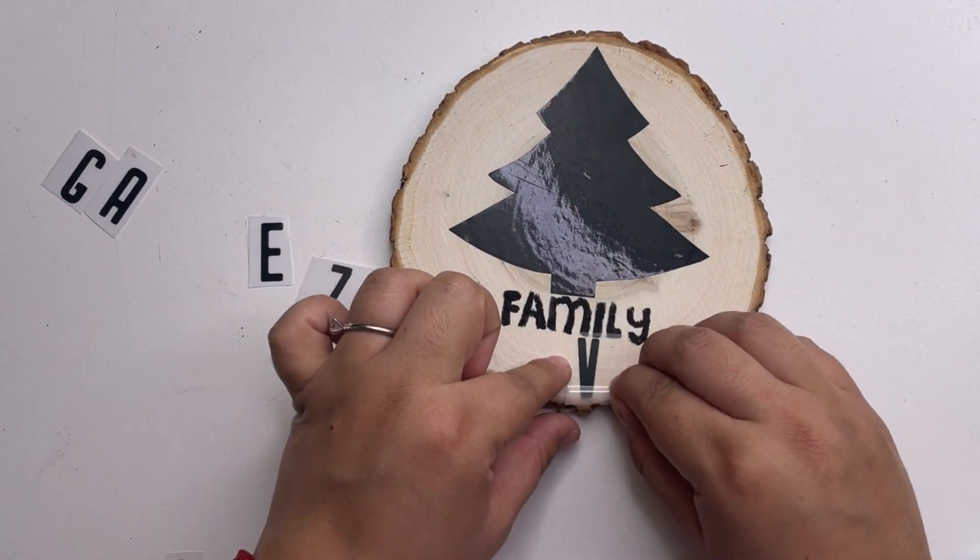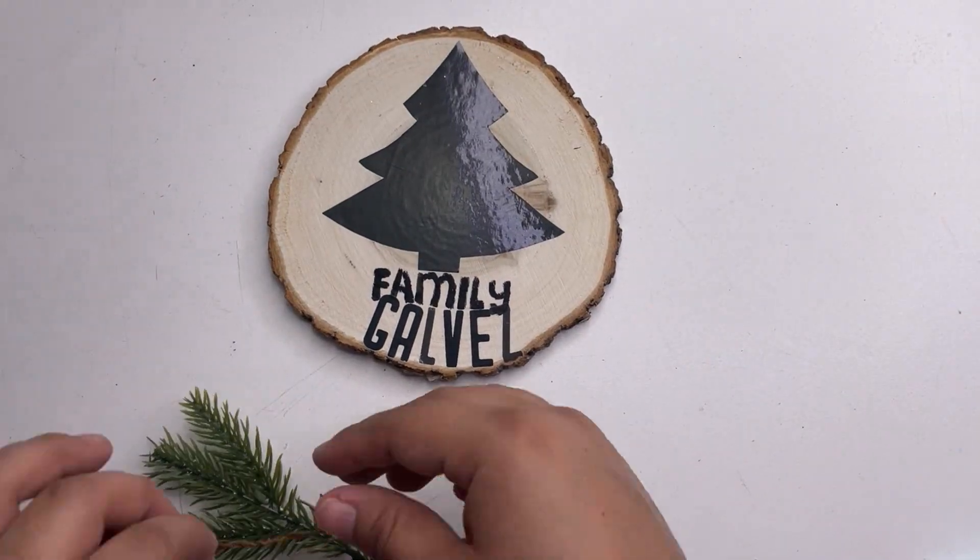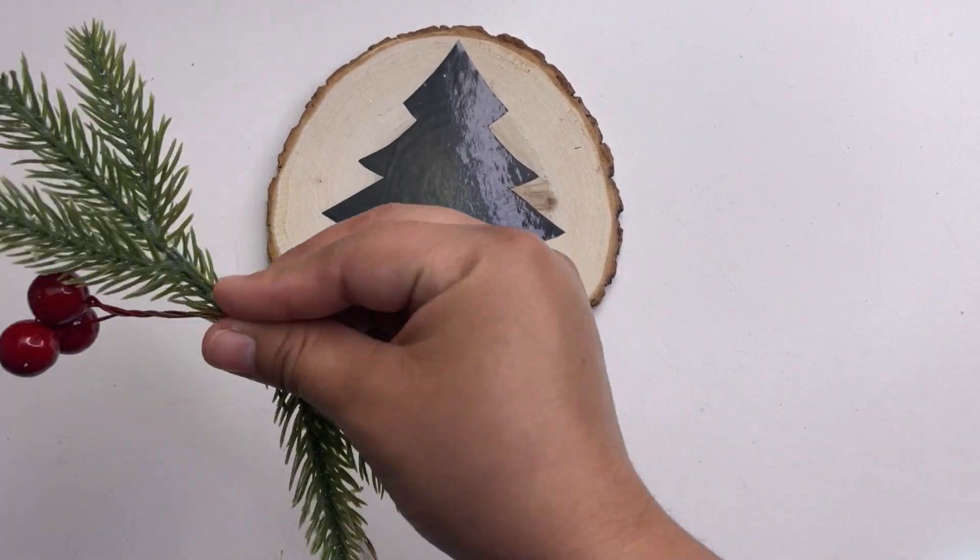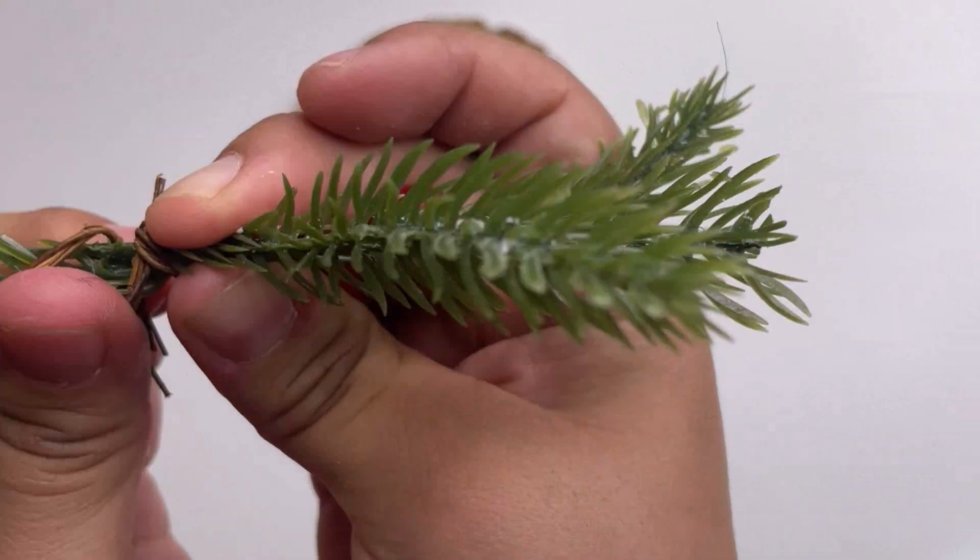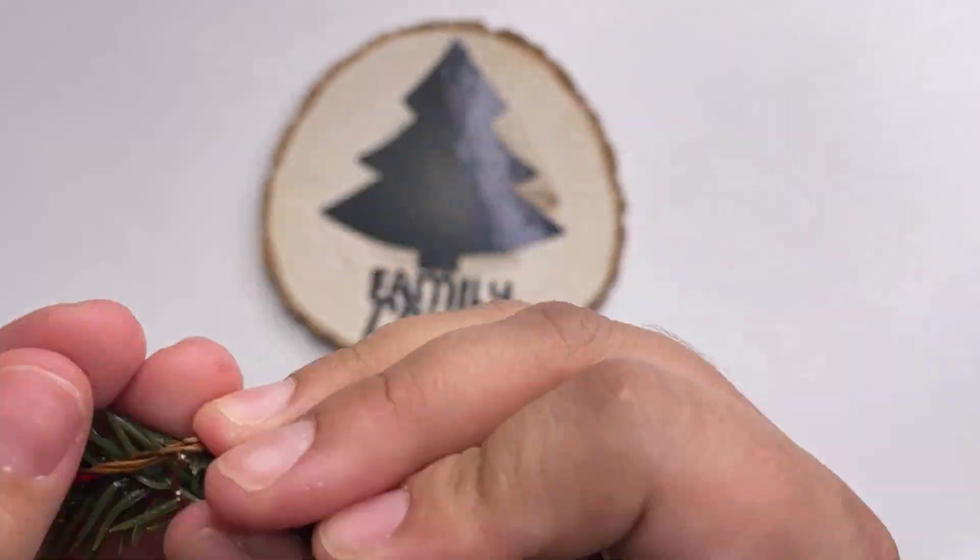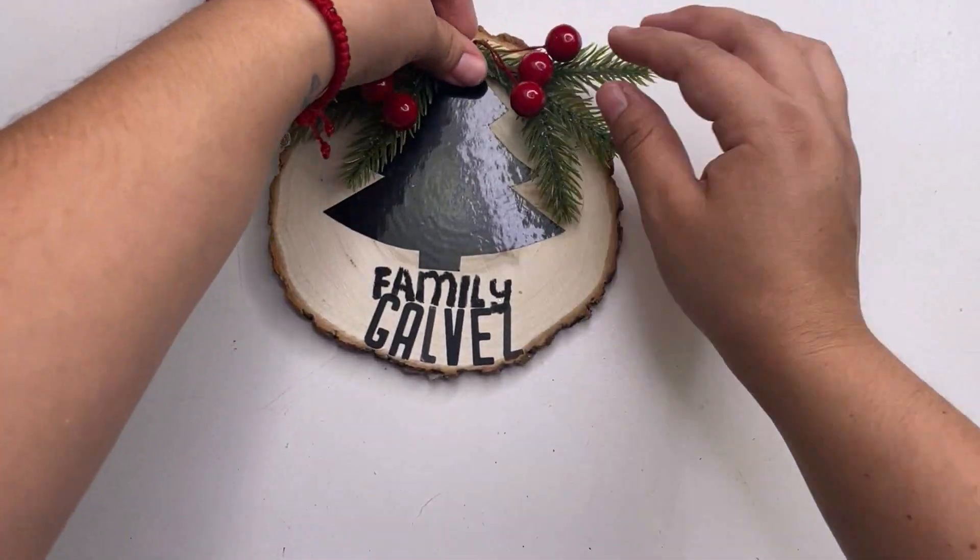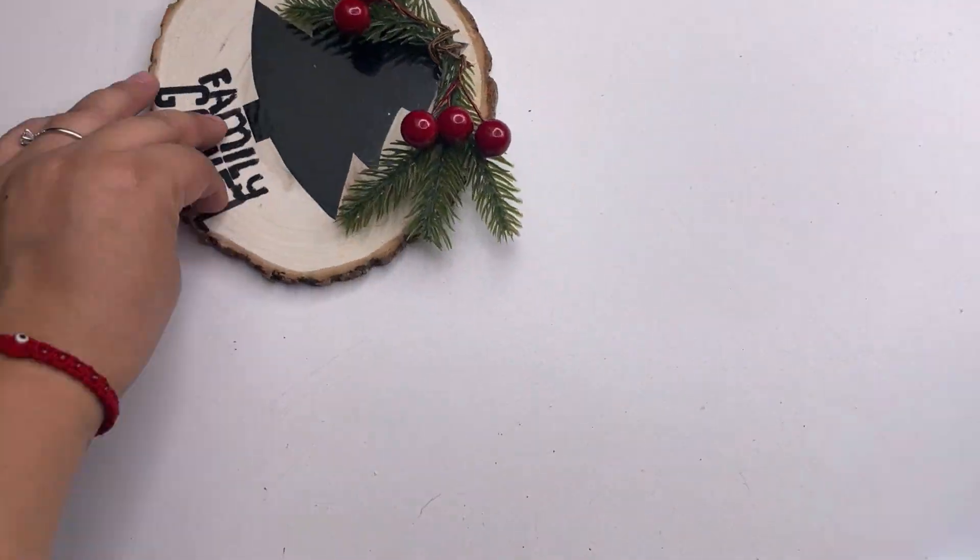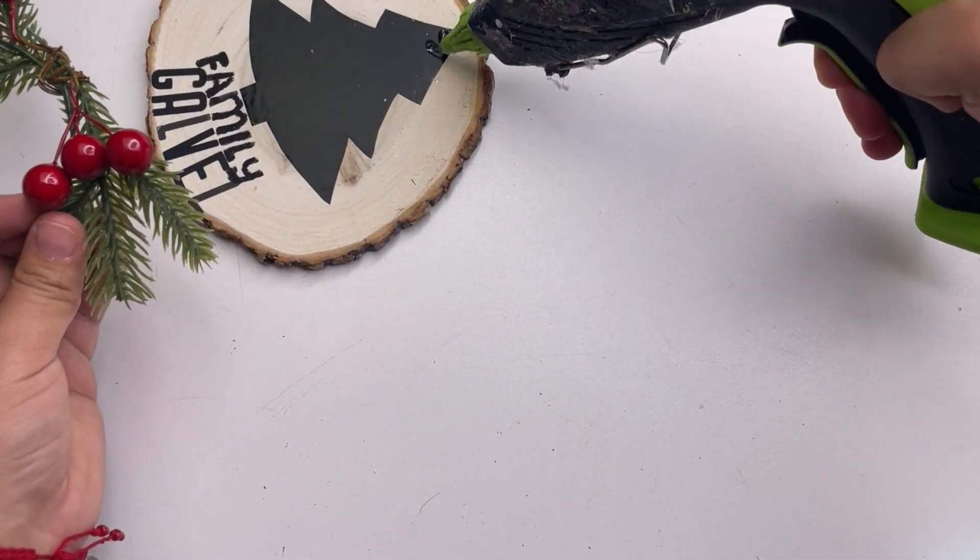To decorate this some more, I'm going to add some greenery and some berries. I already had this greenery, but Dollar Tree is carrying so much Christmas picks that you can use. Now I'm going to add this at the top of the tree, making a bow using the Dollar Tree buffalo check ribbon and adding it to the center.